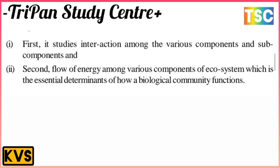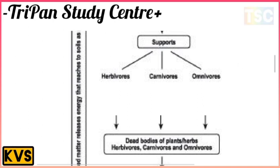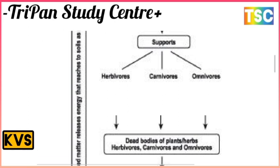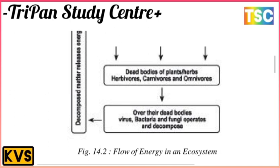Here is the important energy flow diagram of the ecosystem. Starting from solar energy at the surface, energy flows through herbivores, carnivores, omnivores, and the dead bodies of plants. Decomposers including bacteria and fungi then break down dead matter. This is the most important flow of energy in the ecosystem — please search for the energy flow diagram for better understanding.